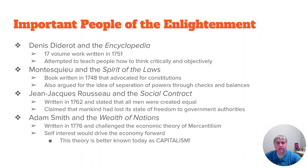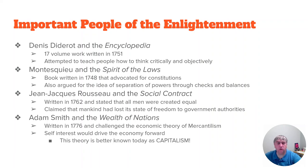Next is Montesquieu, who wrote The Spirit of the Laws in 1748. He advocated for examining constitutional forms and was the first to come up with the idea of checks and balances and separation of powers. Then we have Jean-Jacques Rousseau, who wrote The Social Contract in 1762. Rousseau asserted the moral and legal equality of man, the sovereignty of the people, and argued that it is the people — not the rulers — who should have the say in society.